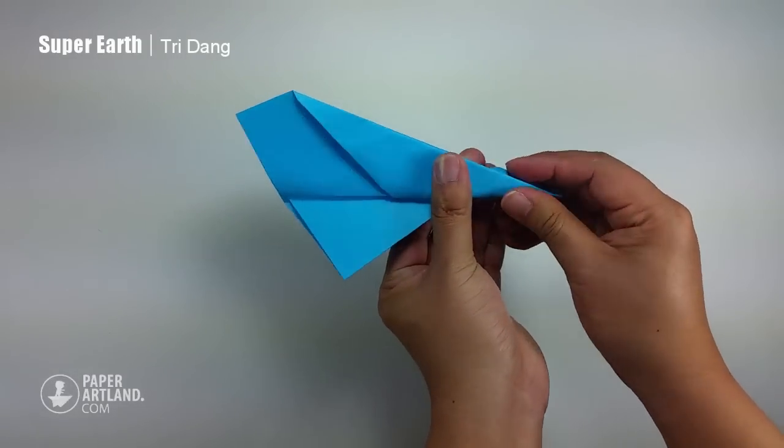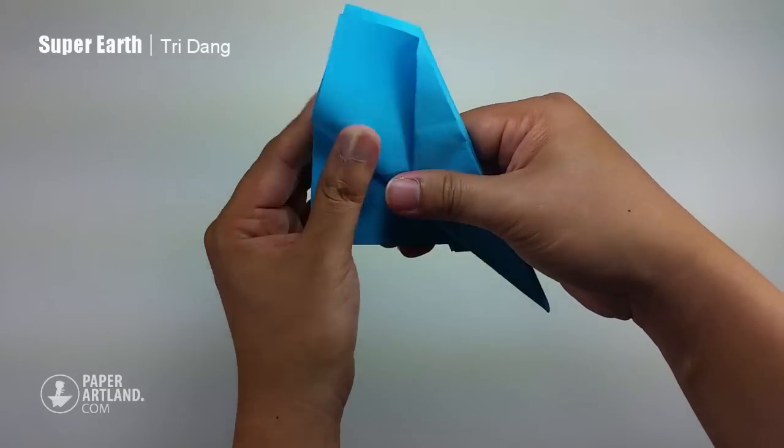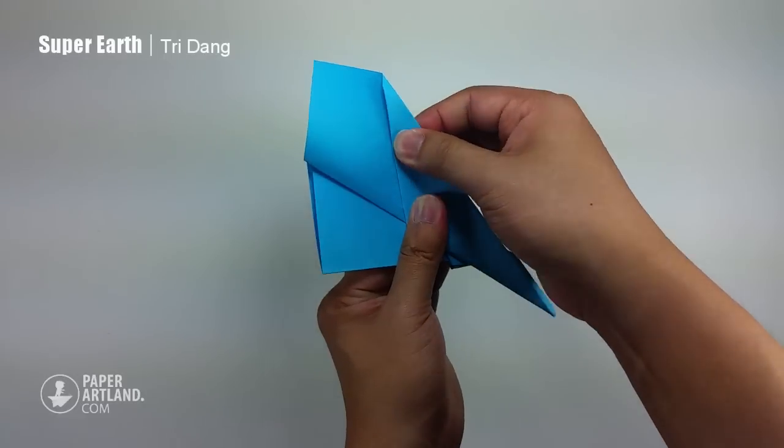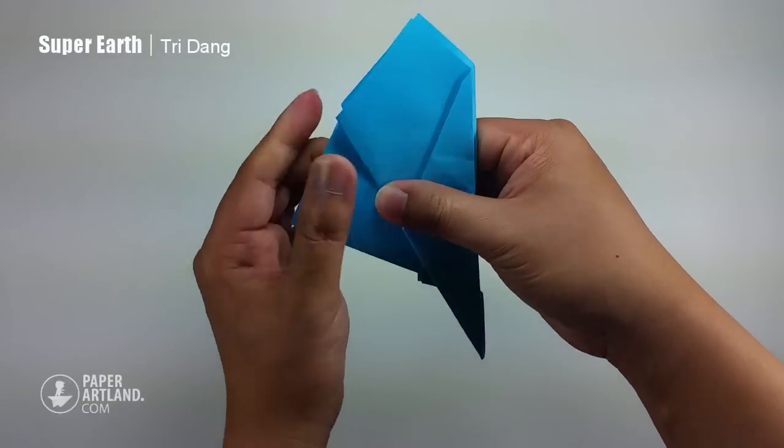Hold the paper like this so it should be easier to fold. Fix the wings. Make sure that both sides are even.